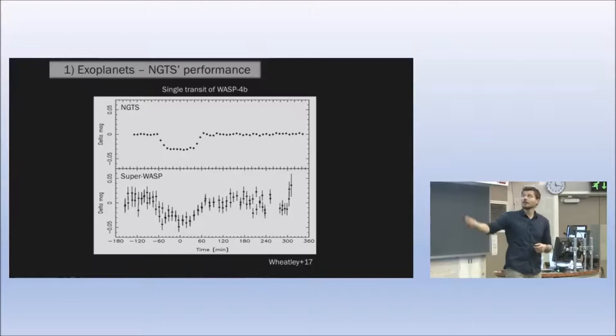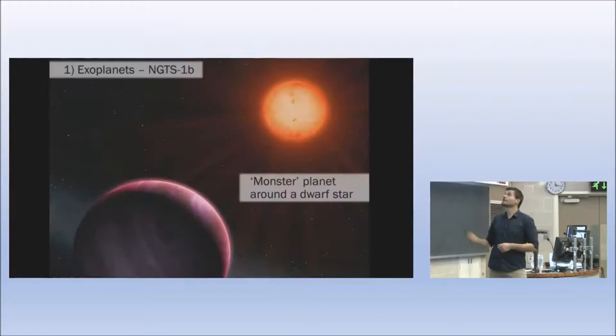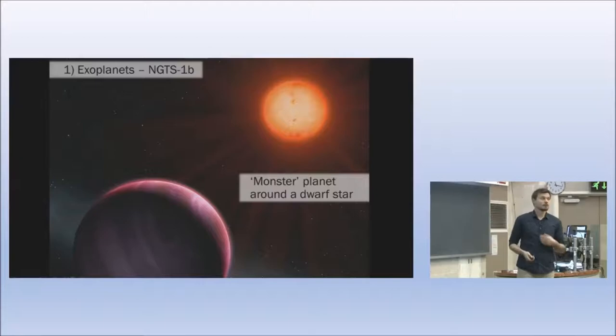This really allows us to push to very small planets that have a very shallow transit, something like just two times or four times the size of our Earth.